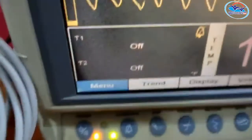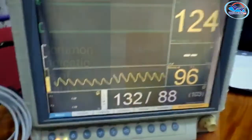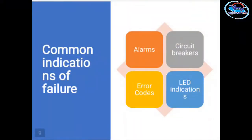Alarms on equipment produce beeping sounds indicating a problem. The circuit breaker may have tripped, and there may be error codes. LED indications and display indicators may blink. These are common indications, equipment complaint symptoms, and equipment symptoms that a technician must recognize.